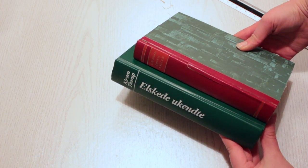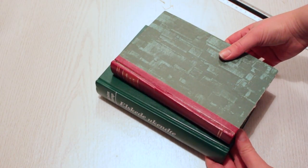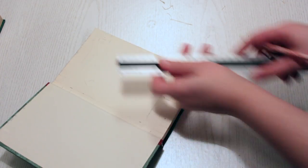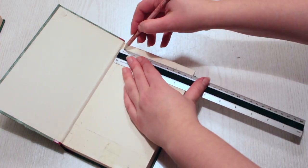But if your book is smaller than 20 centimeters, measure 1 centimeter into the book from each side, make marks, and then create the lines.